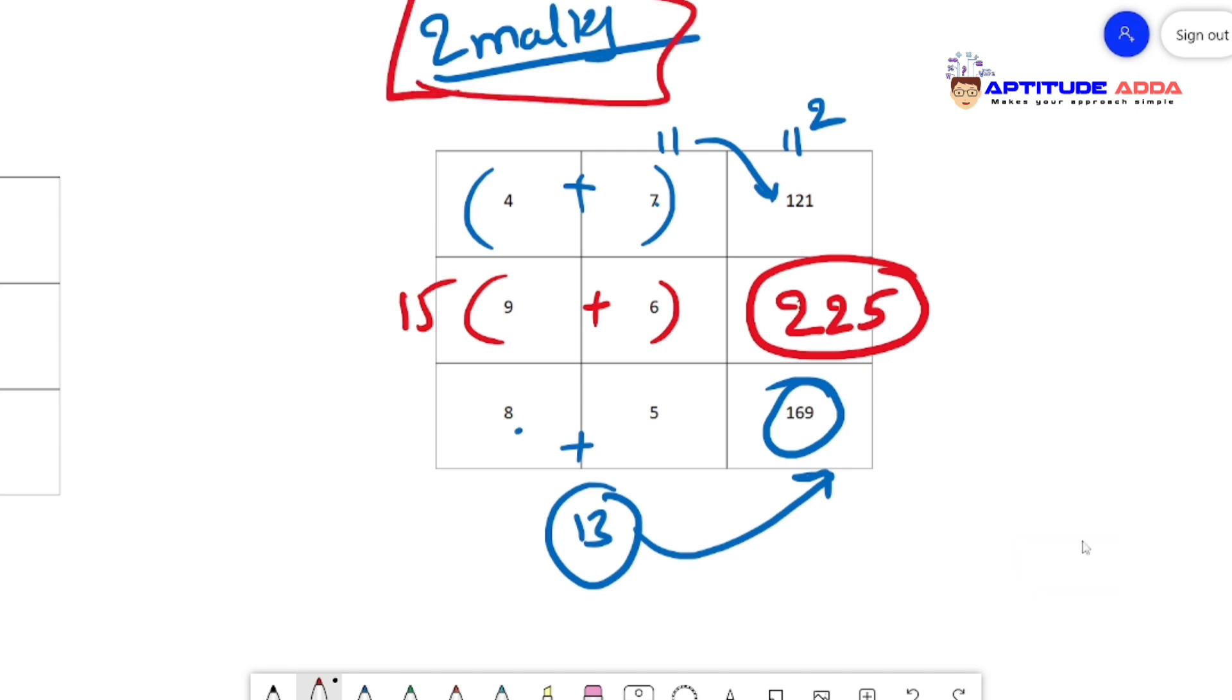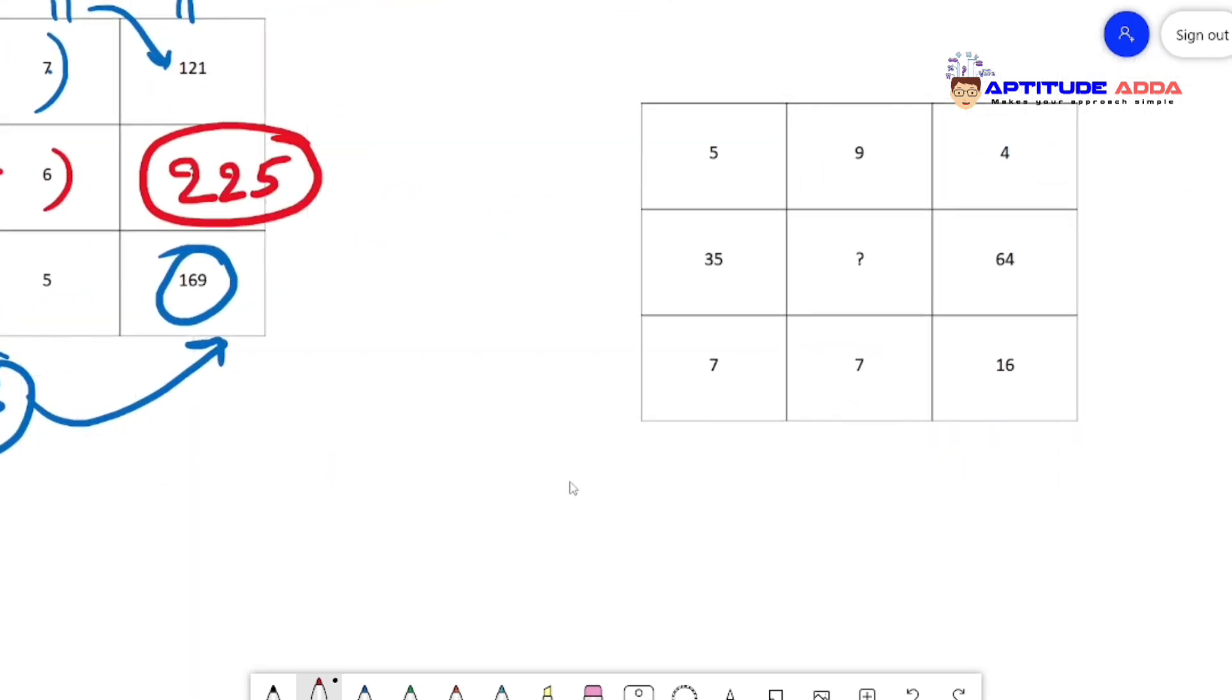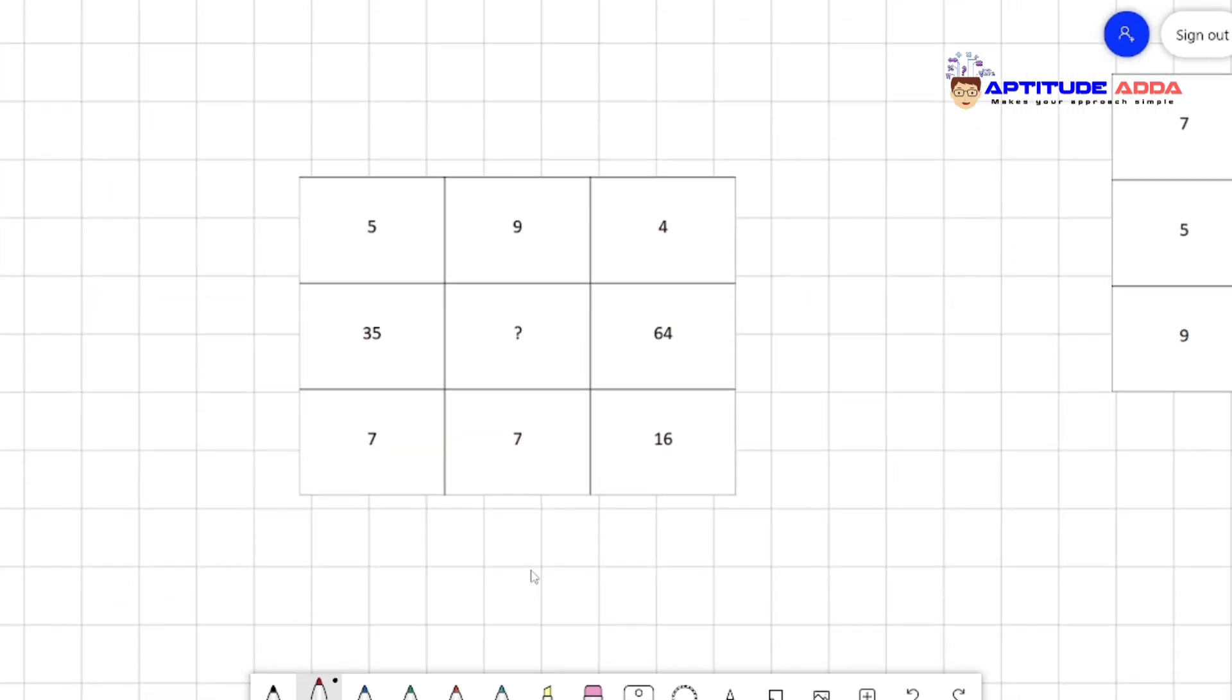Next one, take some time and pause the video, you try to solve. Initially when you see, where are the bigger numbers? 5, 9, 4, 35, 64, 7, 7, 16. Out of these, 35 and 64 are the bigger numbers and they're in the middle. Don't consider 5 plus 4 equals 9 or 7 plus 16 equals 7 - how can it be? Remember where the bigger numbers are, that will be the resultant.